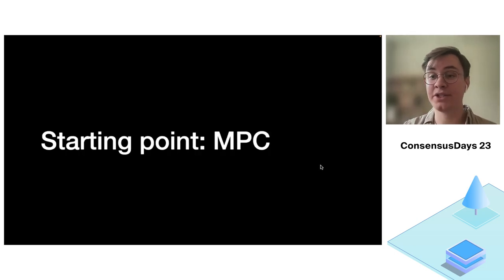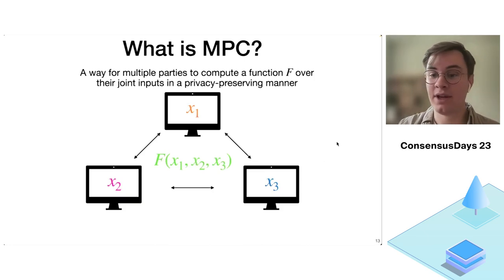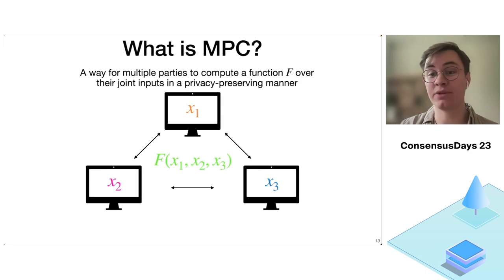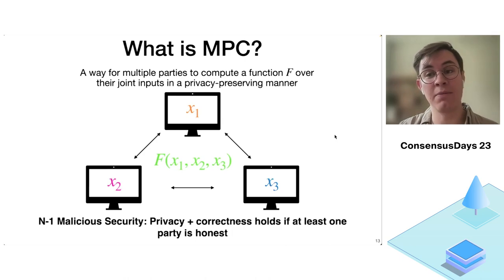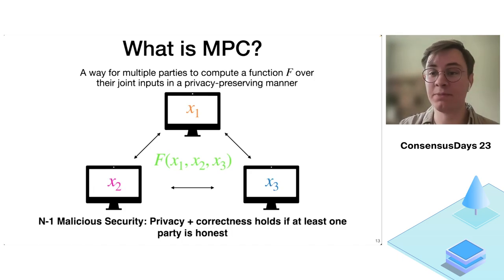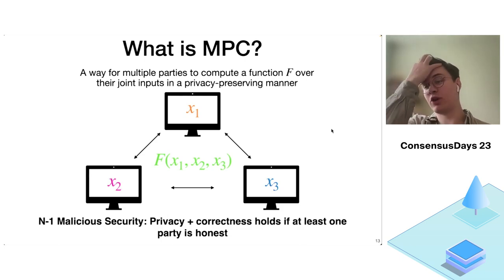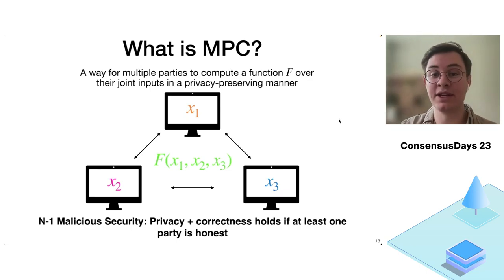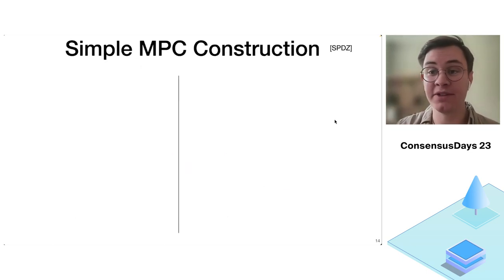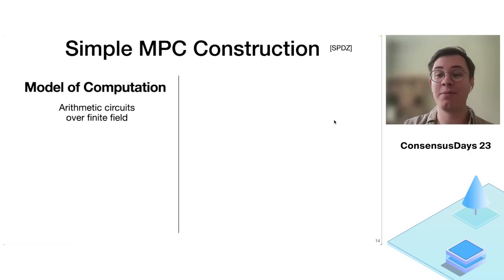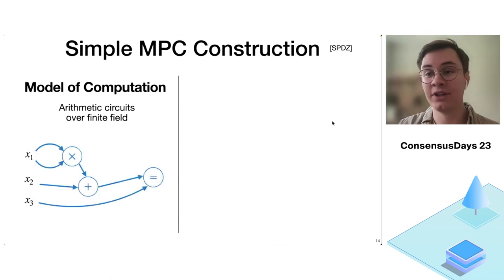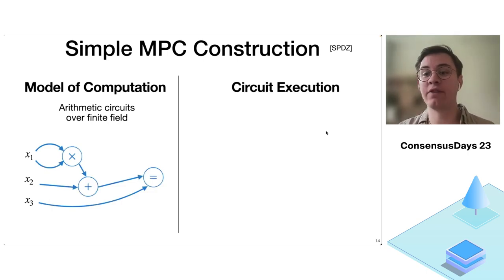Our starting point is multi-party computation, also known as MPC. MPC is a way for multiple parties to compute a function F over their joint inputs in a privacy-preserving manner. We're interested in N-1 malicious security, which means privacy of the parties' inputs and correctness of the output holds if at least one party is honest. Today we'll focus on a protocol called SPDZ, whose model of computation is arithmetic circuits over a finite field. To execute the function F, I express it as an arithmetic circuit.